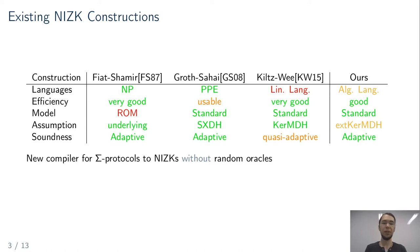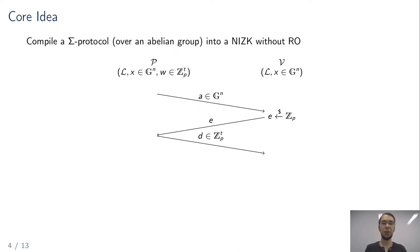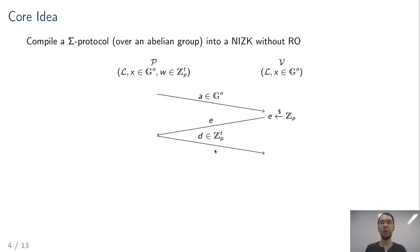What is the idea of our compiler? We start with a sigma protocol over an abelian group, where the word is a group element vector, the witness is a Z_p vector, the first flow is a group vector, the challenge from the verifier is a random Z_p element, and the response is a Z_p vector. We want to compile this into a non-interactive zero-knowledge argument.